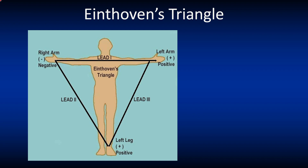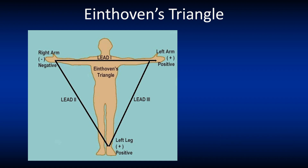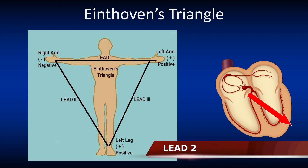Let's look at the three limb leads using Einthoven's Triangle. In lead one, it's negative on the right arm but positive on the left leg. In lead two, it's negative on the right arm but positive on the left leg. In lead three, it's negative on the left leg. For the purpose of this basic ECG series, we'll be using lead two as it looks at the heart matching the usual electrical vector.